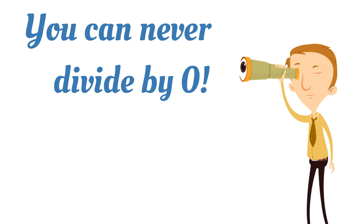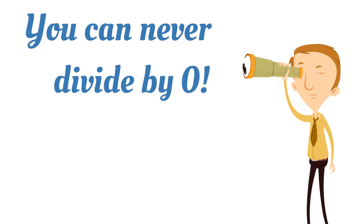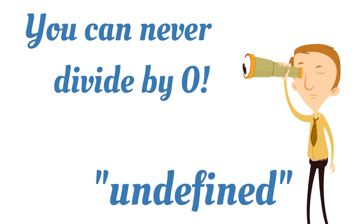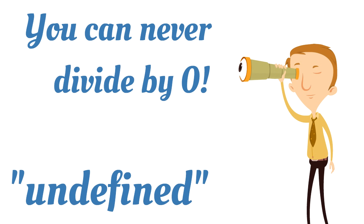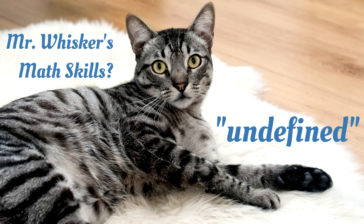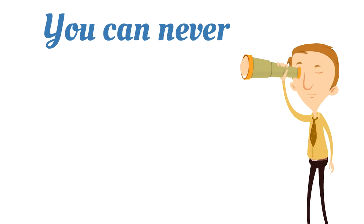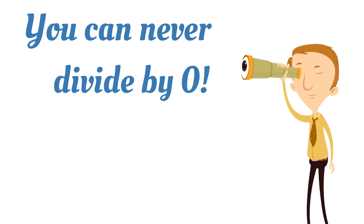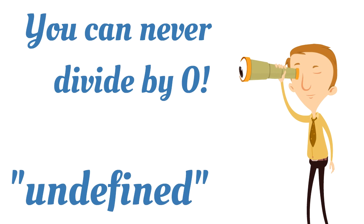You can never divide by zero. It's true — even if you're a rule breaker, you still can never divide by zero. In fact, if a teacher ever gives you a test and you see a problem where you have to divide a number by zero, just write 'undefined' on the test, because that's exactly what that answer would be — undefined. It's impossible. You can never divide by zero.